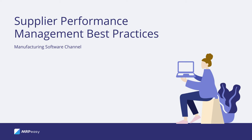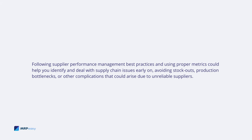5 Tips for Supplier Performance Management. Following supplier performance management best practices and using proper metrics could help you identify and deal with supply chain issues early on, avoiding stockouts, production bottlenecks, or other complications that could arise due to unreliable suppliers.